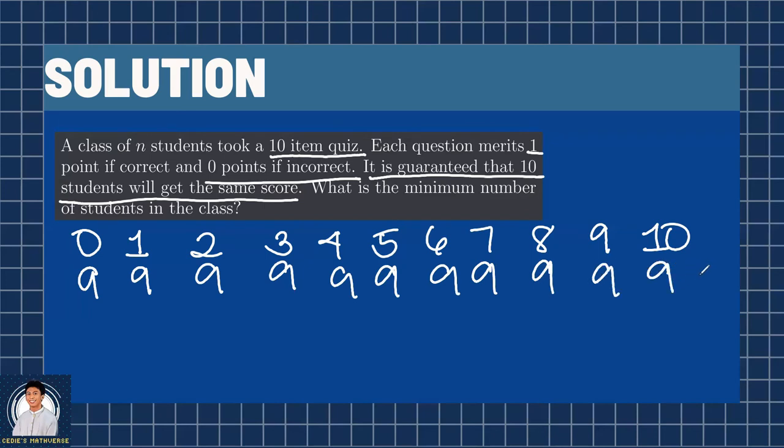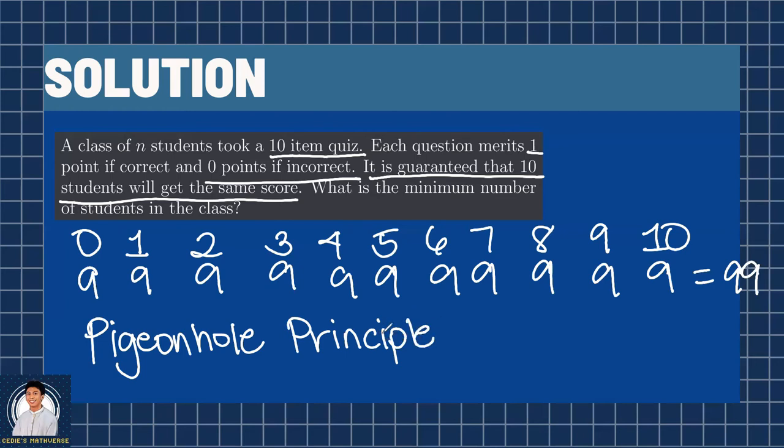This gives us a total of 99 students. And we use a principle that is well-known in combinatorics, which is the pigeonhole principle. This worst-case scenario leads us into adding one more student. So, we have a total of 99 plus 1 equals 100 students. The 100th student can be placed anywhere here, and you have a guaranteed 10 students that will get the same score.